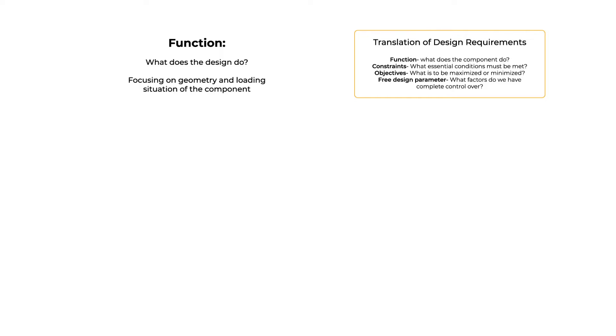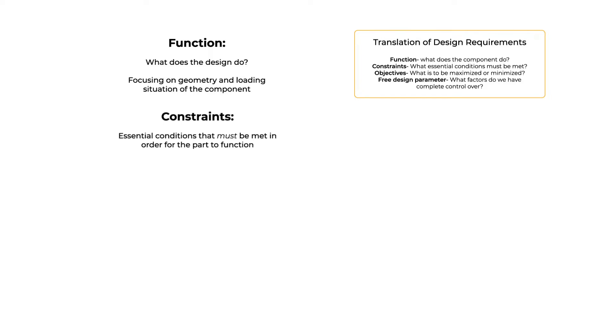Ties carry tensile loads, beams carry bending moments, shafts carry torque, and columns carry compressive loads. Second are the constraints — these are essential conditions that must be met in order for the part to function. Think: the material must be electrically conductive, or have a maximum service temperature above a specific value.